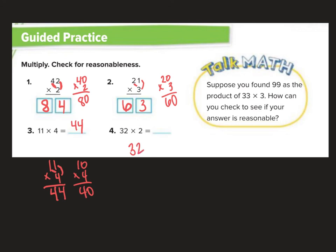Here I have 32 times 2. 2 times 2 is 4. 2 times 3 is 2 groups of 3, so it would be 3, 6, 64. To check, I'm going to do 30 times 2, which is 30 plus 30 is 60. Are 60 and 64 close together? Yes, they are.